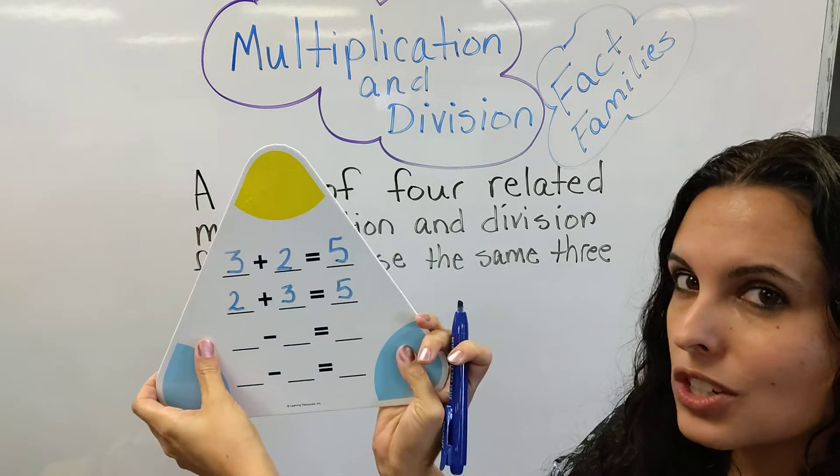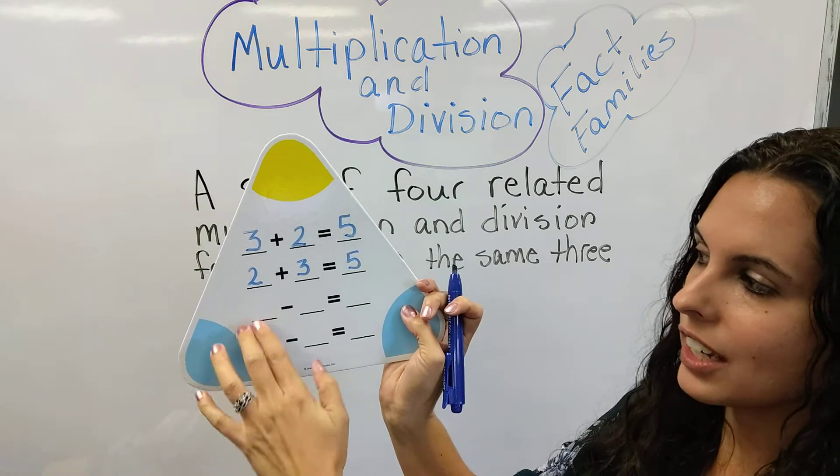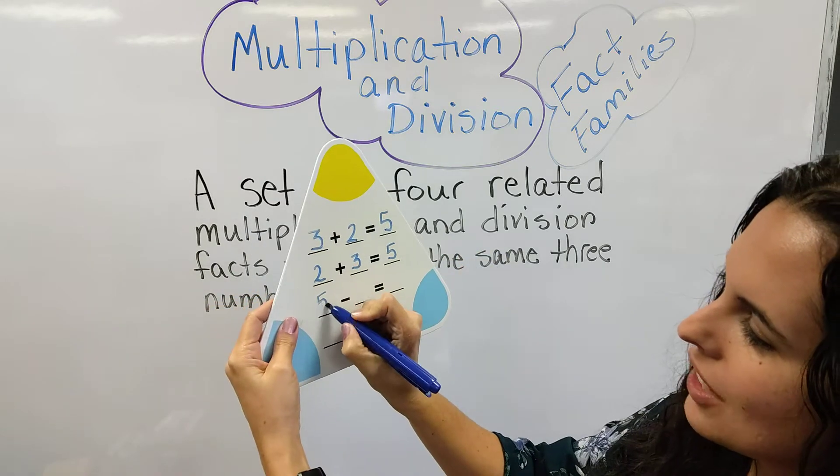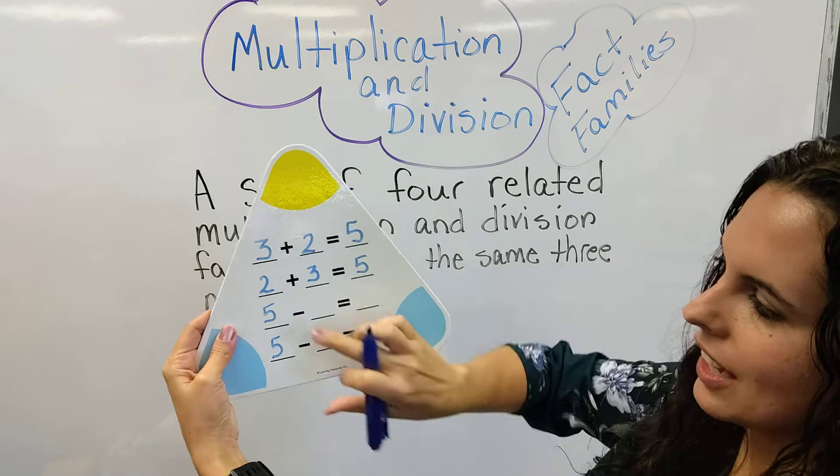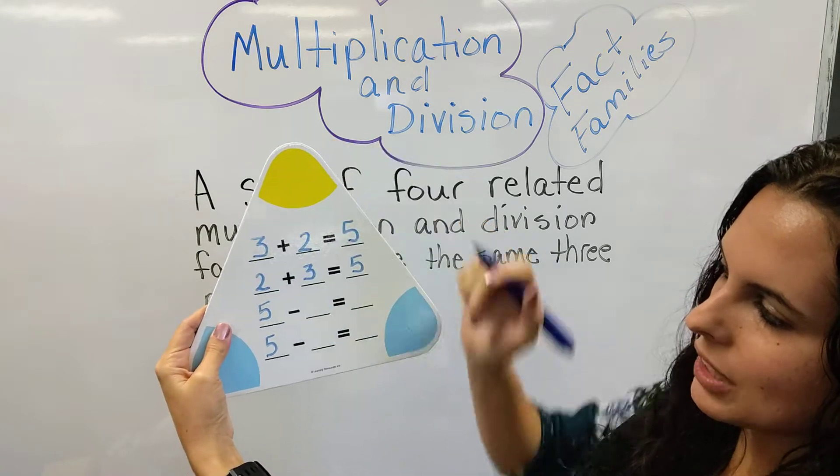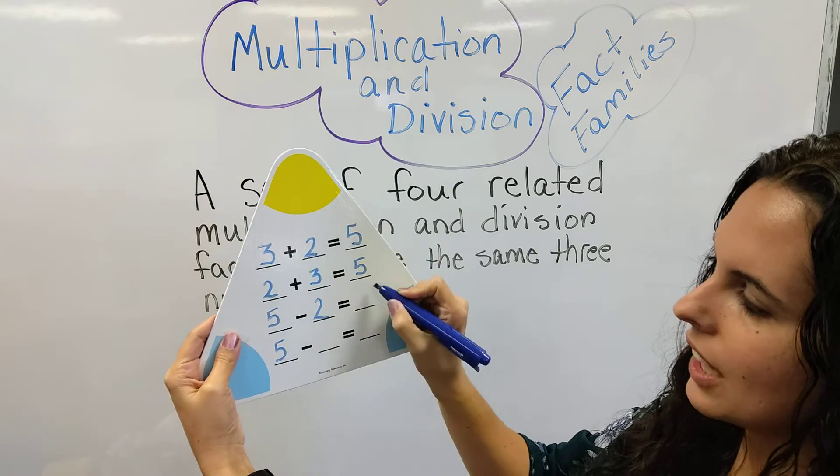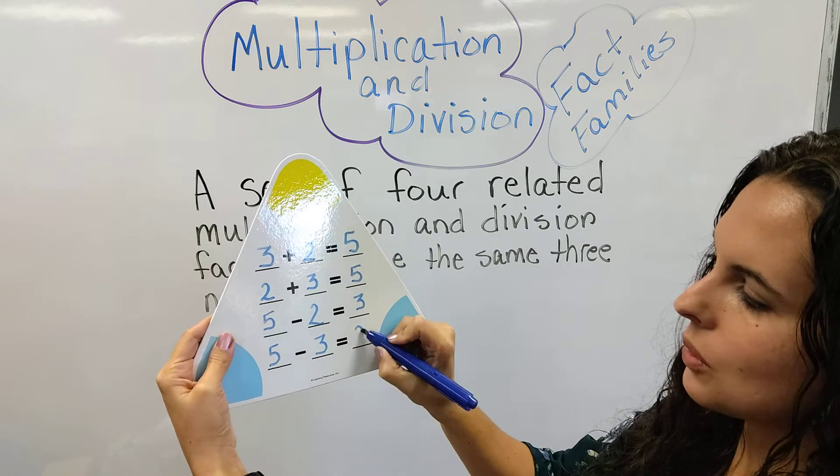When you do subtraction, your big number now goes in front because you're not going to do that and get negatives yet. So when you do subtraction, your big number, that's your answer for your addition, is now up front. So now you're going to take the 2 and the 3 and they're going to trade places. So 5 minus 2 equals 3 and 5 minus 3 equals 2.